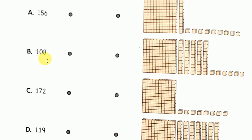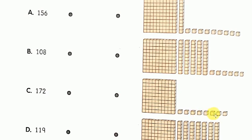The second number is 108. 108 has 1 hundred block, no ten blocks and 8 ones cubes. Looking at the place values, you can see there is 1 hundred block, no tens blocks and 8 small ones cubes. So you can match B with the third picture given here.